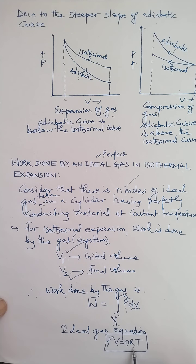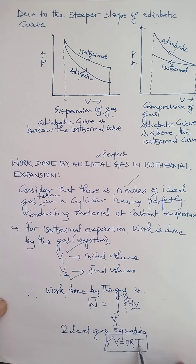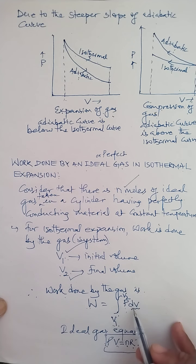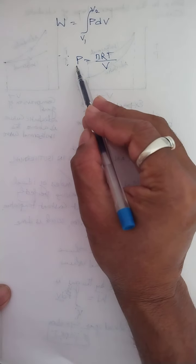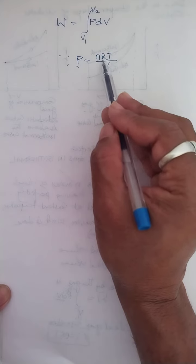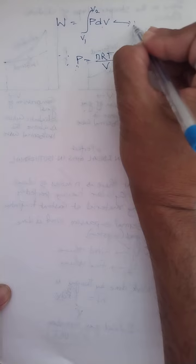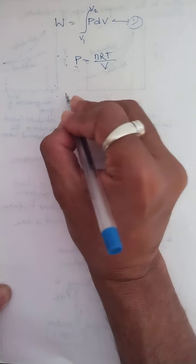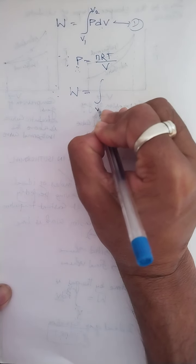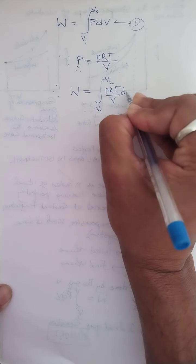To eliminate P and calculate work done in terms of temperature and integrate with volume, I make P the subject from the ideal gas equation: P = nRT / V. I substitute this value of P into the work done formula — W equals integration from V1 to V2 of (nRT / V) dV.